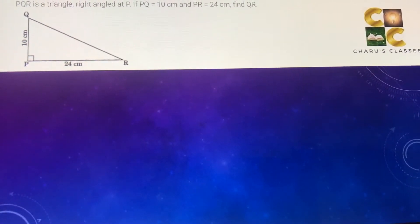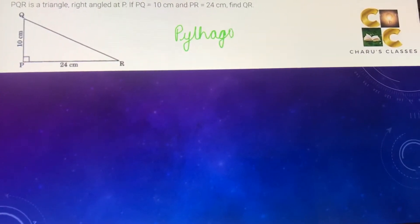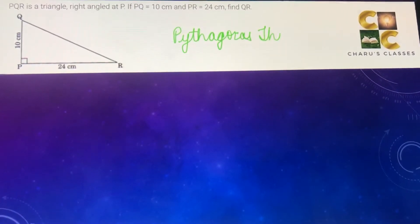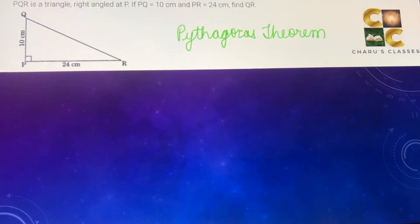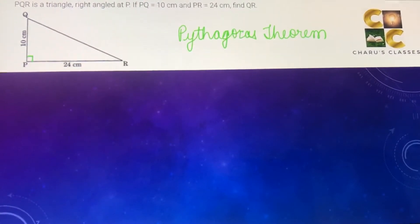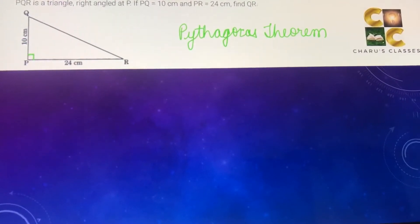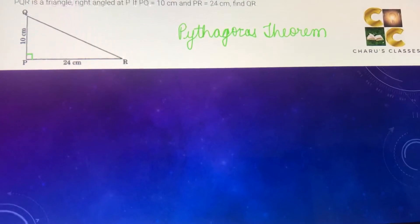In this question we are going to use the Pythagoras theorem. According to the Pythagoras theorem, this particular theorem is there only for right angle triangles. So here is given that angle P is 90 degree, so this triangle is a right angle triangle.